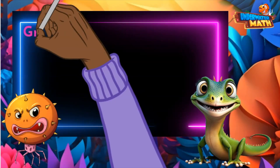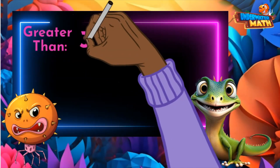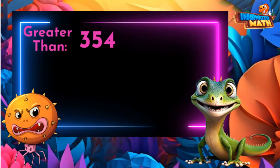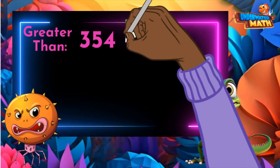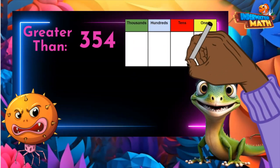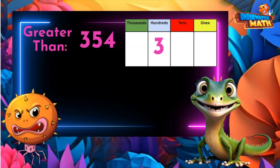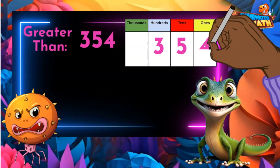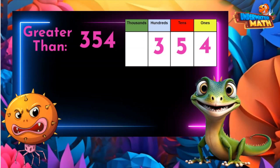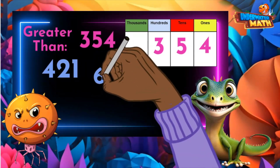Ziggy is looking for numbers that are greater than 354. Let's help him out. If we put 354 in a place value chart, we can see that it has three hundreds, five tens, and four ones. Any number that has a digit greater than three in the hundreds place will be greater than 354, like 421 and 602.